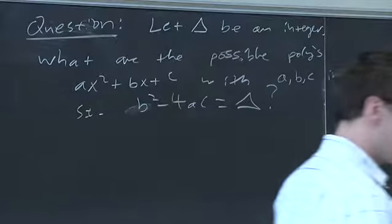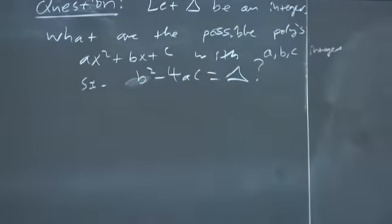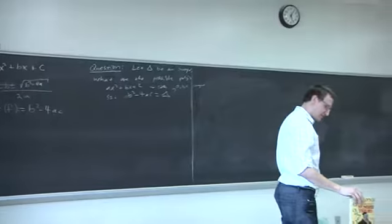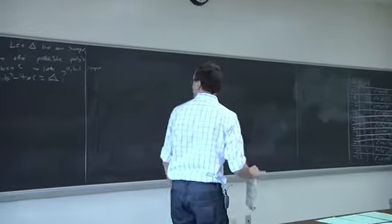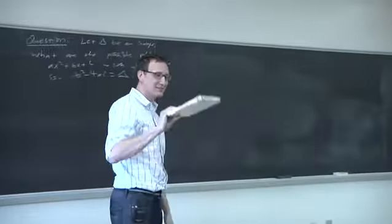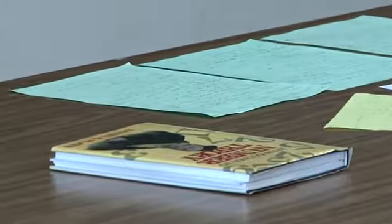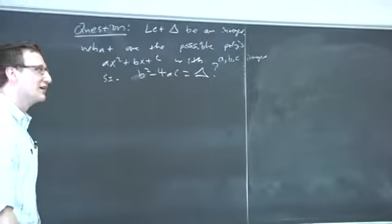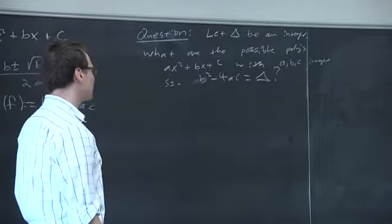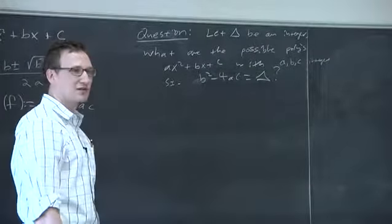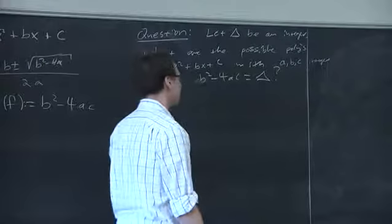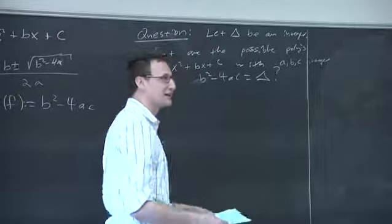Pretty much everything I'm talking about can be found in an appendix called 'Delta equals b² − 4ac' in the book Introduction to Number Theory by Flath. The appendix is actually written by Sayre. He mentions that this question goes back to Gauss around 1800. Probably people were interested in this earlier, but Gauss had the first really good ideas about how to answer it.